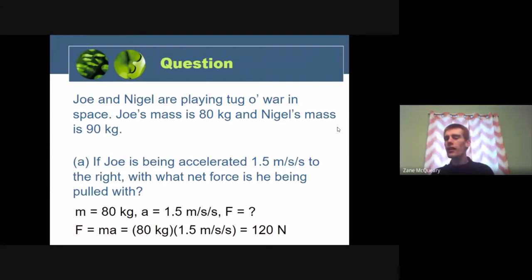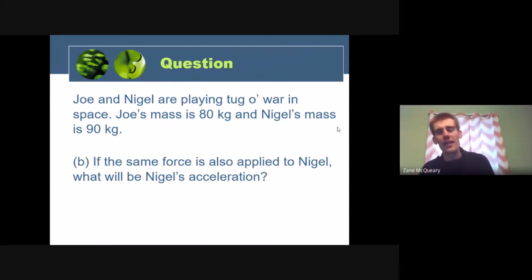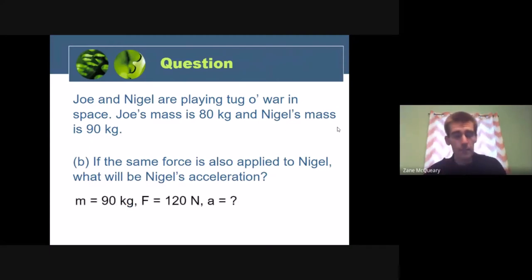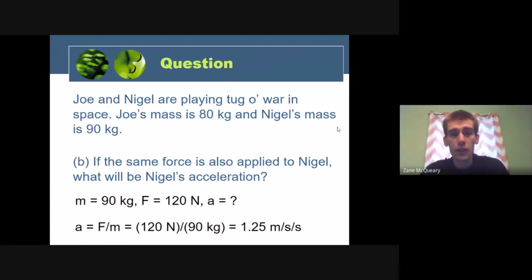Now, Newton's third law says that the force that Joe pulls with is the same force that Nigel's experiencing. So let's flip this and say, okay, well, if Nigel's also applying that same force, then what's his acceleration? Because he's a little bigger. Well, we're still given the force of 120 newtons. We're still given Nigel's mass of 90 kilograms. Let's solve for acceleration. Still going to use F equals MA. We have the F, we have the M, we will solve for A with a little bit of algebra. And we see that the acceleration is 1.33 meters per second squared. So because Nigel's a little larger, he's not going to accelerate as much as Joe.